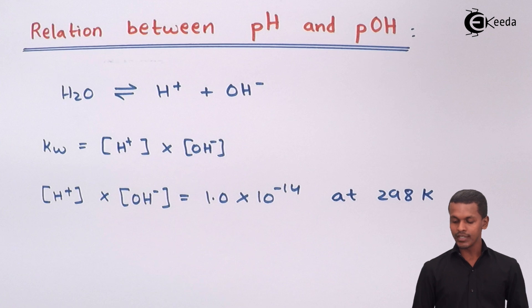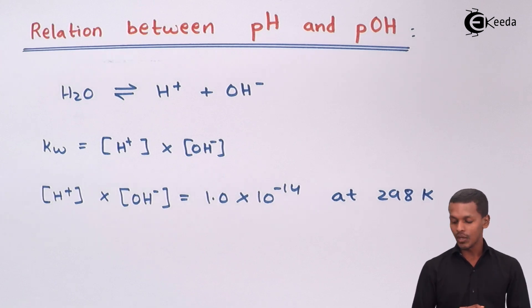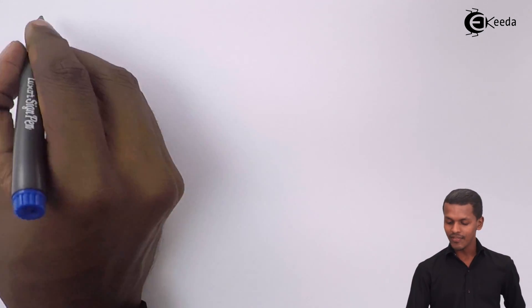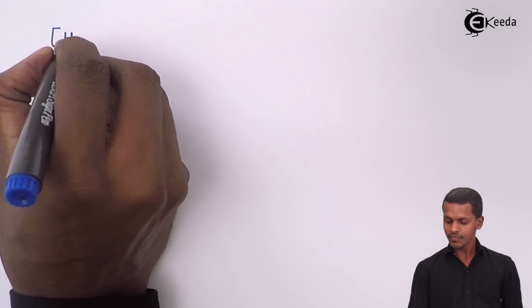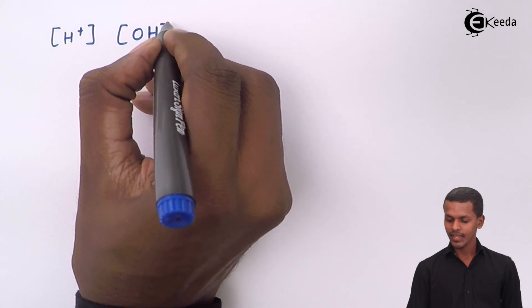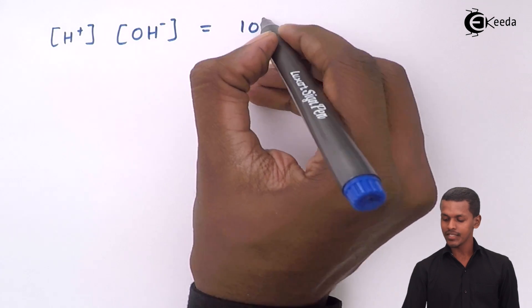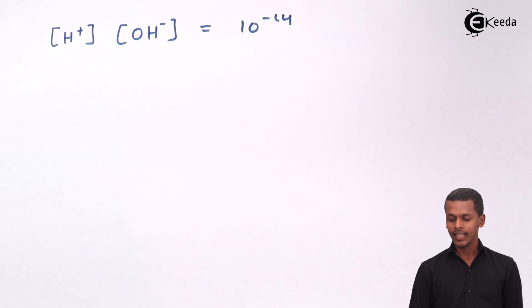This is the expression we have for the ionic product of water, and by using this we are going to make a relationship between pH and pOH. So we have H⁺ ion concentration multiplied by OH⁻ ion concentration equals 10⁻¹⁴. Now let us apply log on both sides.